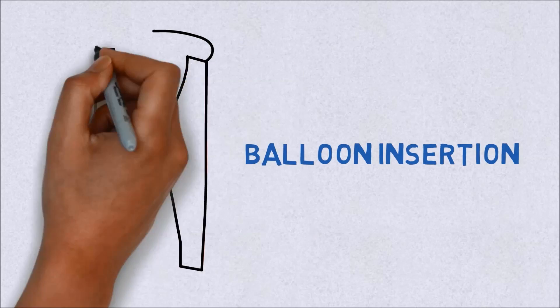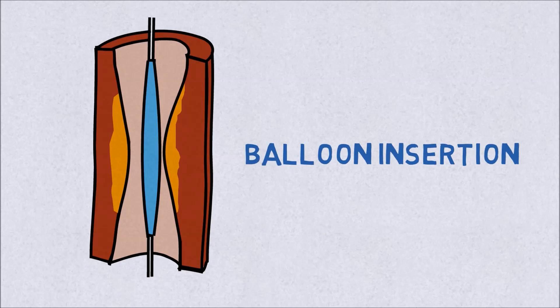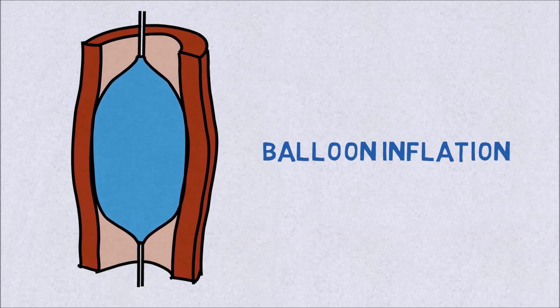In angioplasty, a specially made balloon placed on the wire is passed into the narrowed or blocked coronary artery. The balloon is then inflated, enlarging the narrowed segment.